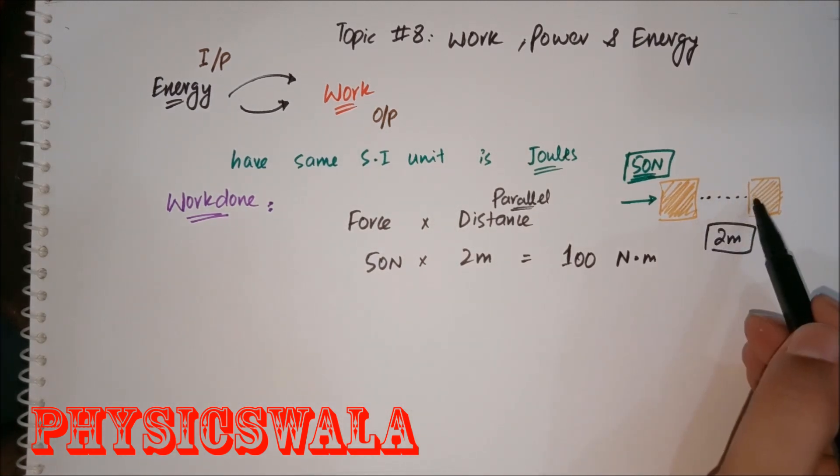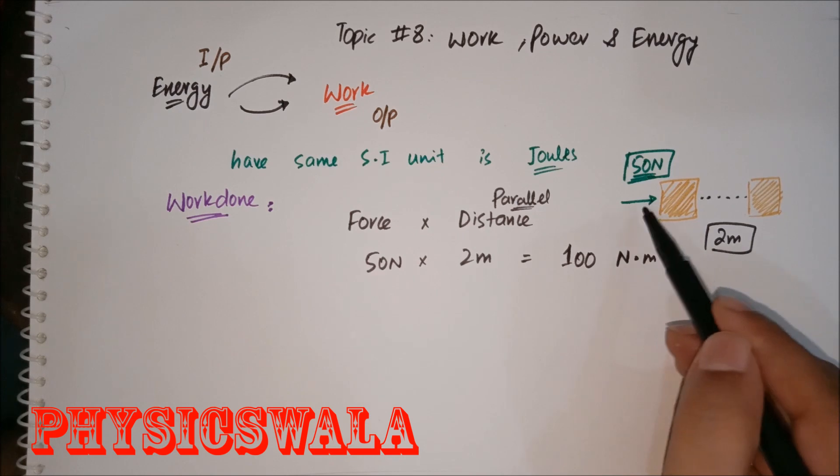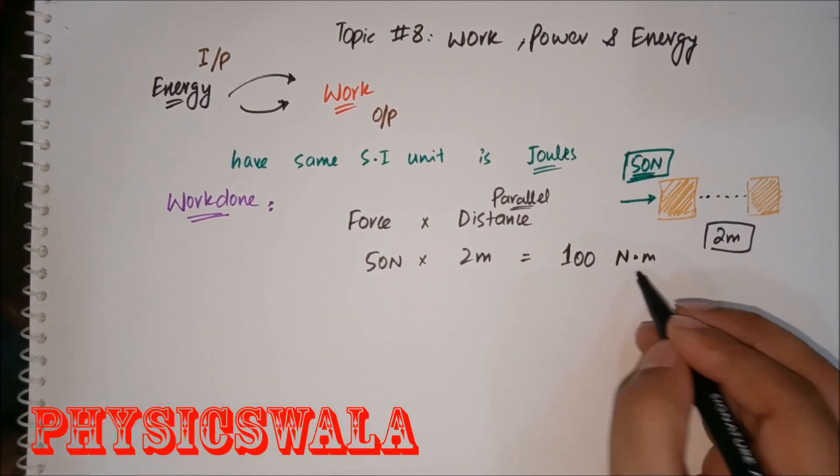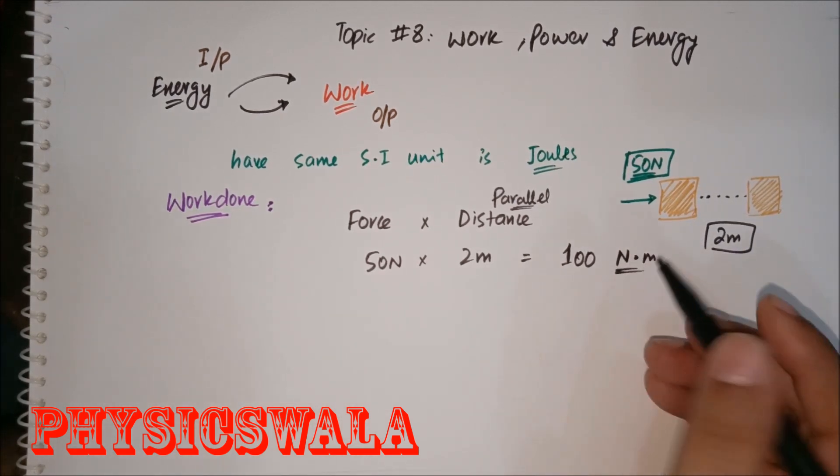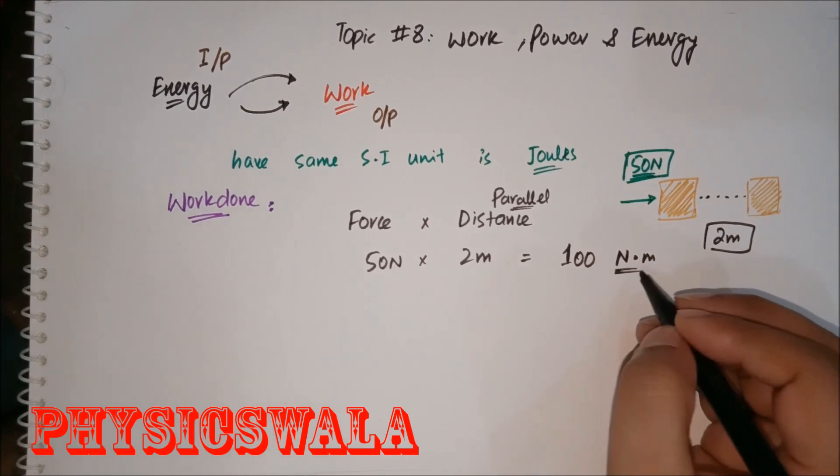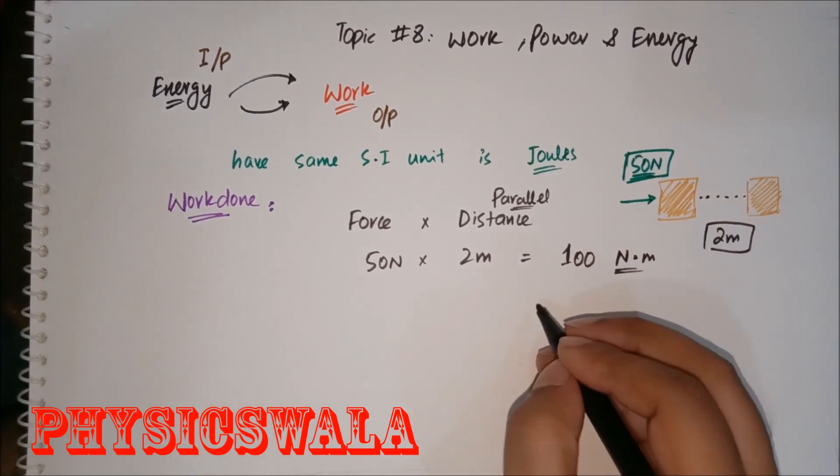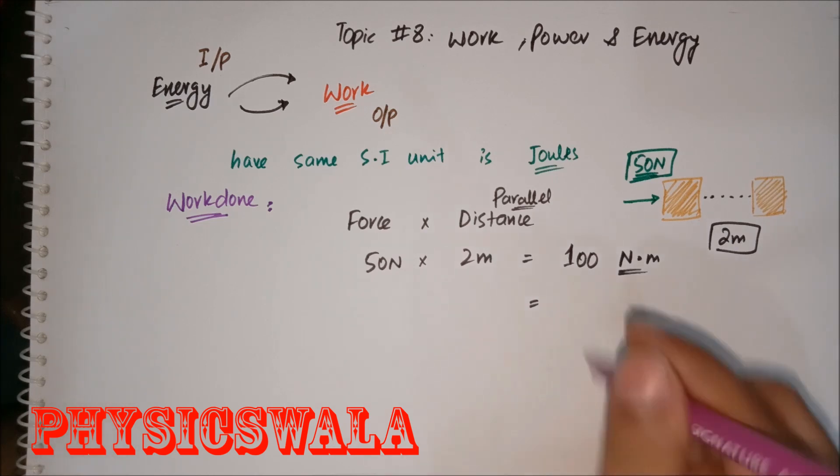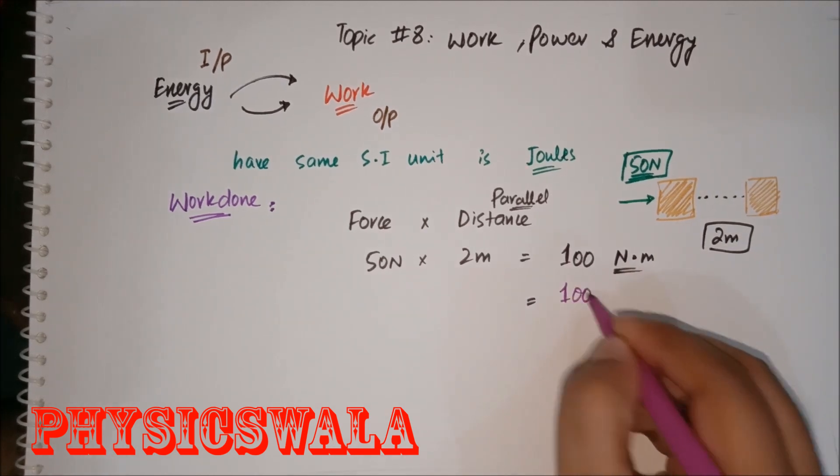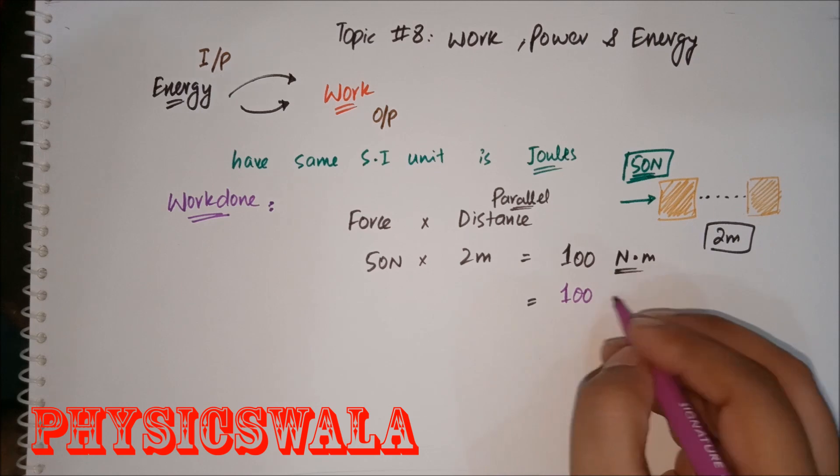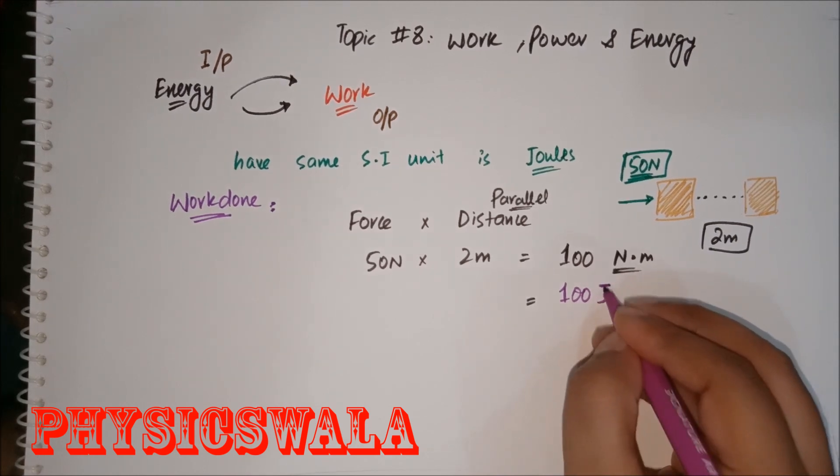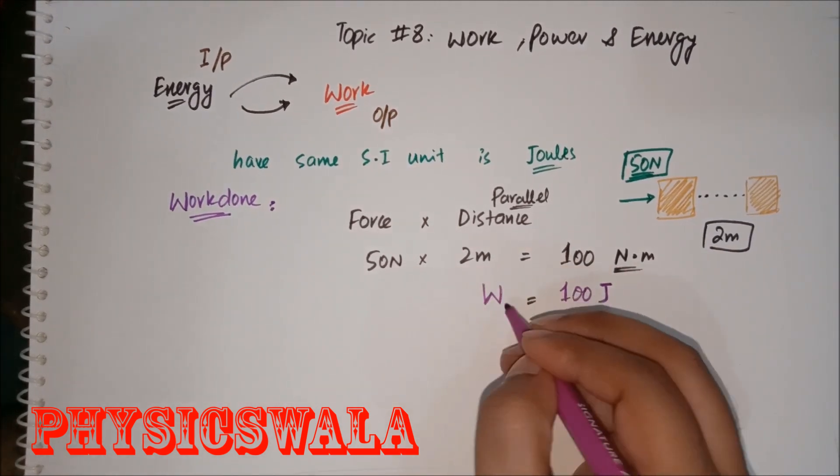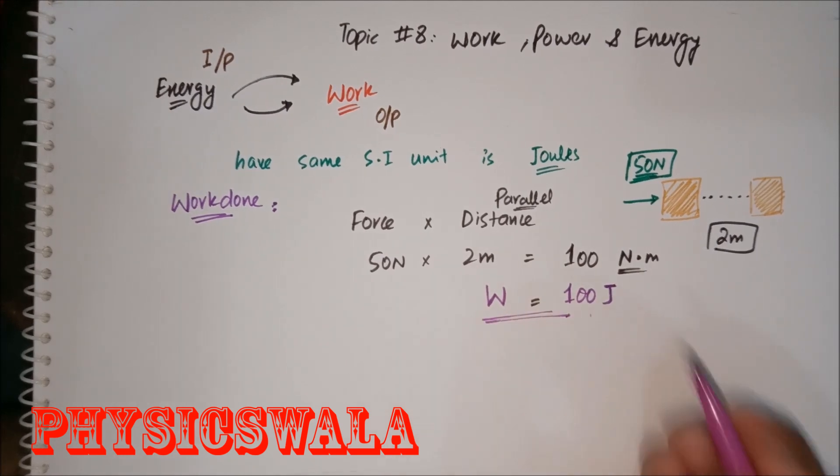This distance must be in the same direction as this force. You see, 100 Newton meters, which we accept as 100 Joules. So the work done I have got is either 100 Newton meters or 100 Joules. This is the work done I have achieved.